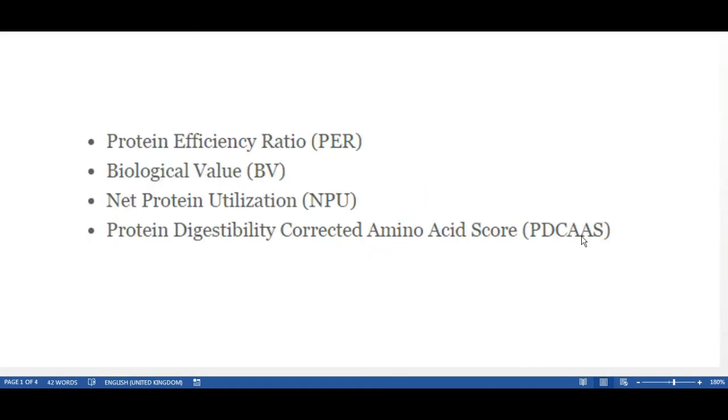There are four different methods used to determine the absorption rate of different proteins. You've got protein efficiency ratio which uses animals, specifically rats, and looks at how the protein quality affected the growth within those rats. This is a bit of an outdated method.